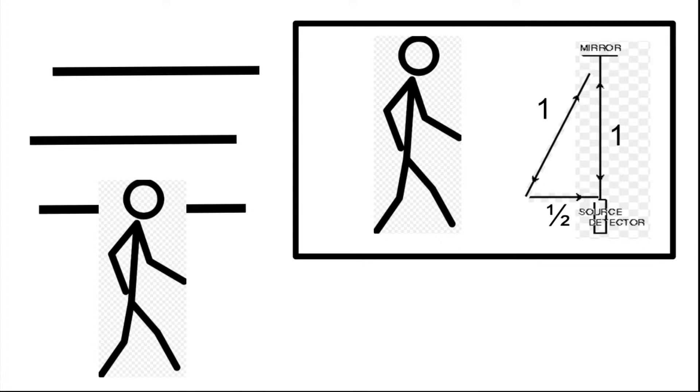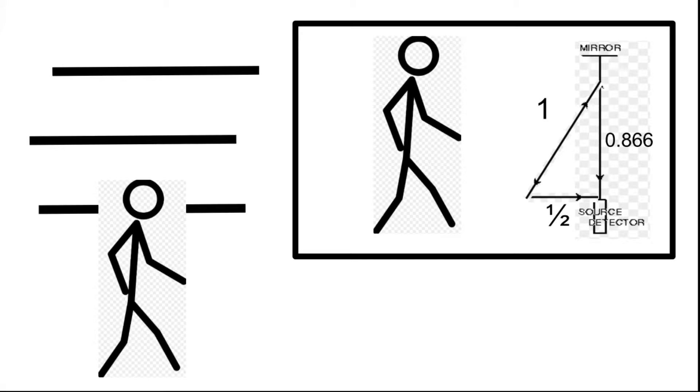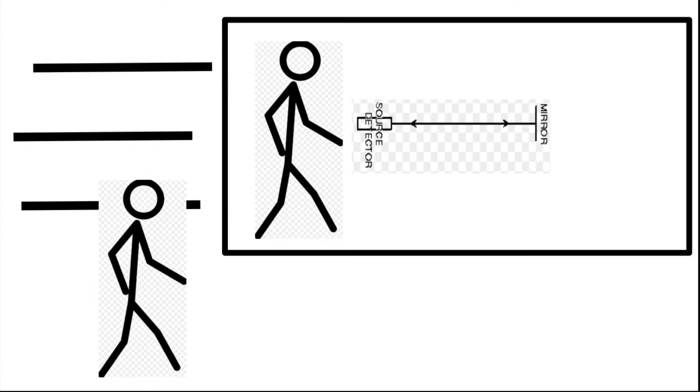An outside observer will see the light having to move diagonally because of the movement of the spaceship. To prevent the light from falling behind the spaceship, which would make the person moving with the clock see the light going at a different speed, the light must move one light second diagonally and half a light second sideways because of the speed of the ship. Using the Pythagorean theorem, the light moves up 0.866 light seconds.